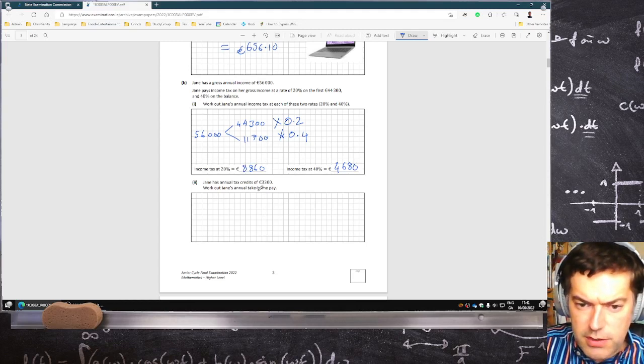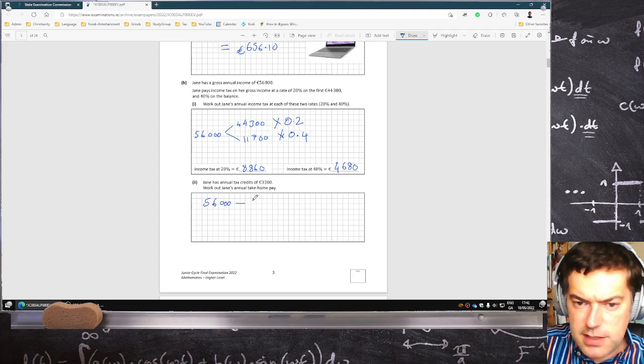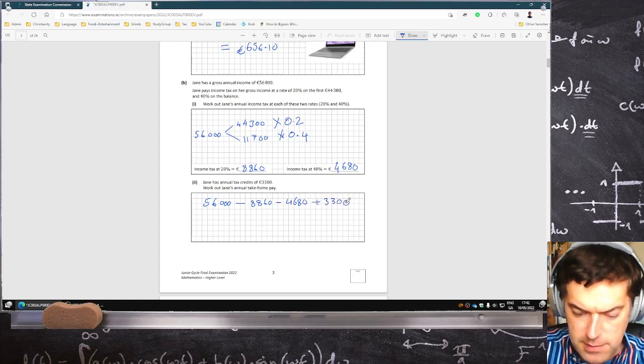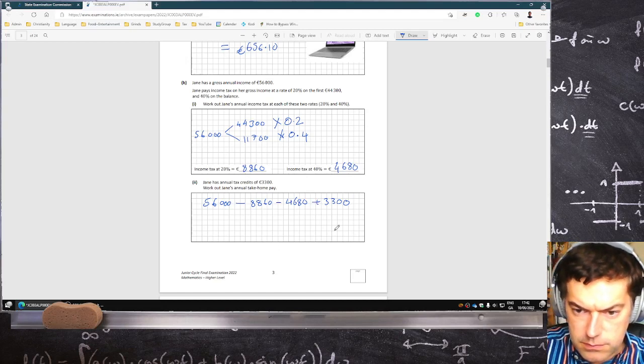Work out her take-home pay. Okay, so it's going to be $56,000 minus $8,860 minus $4,680, and that's $42,460.